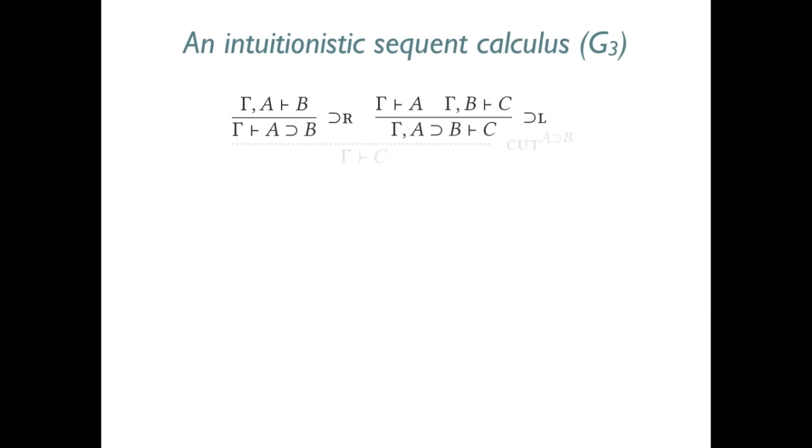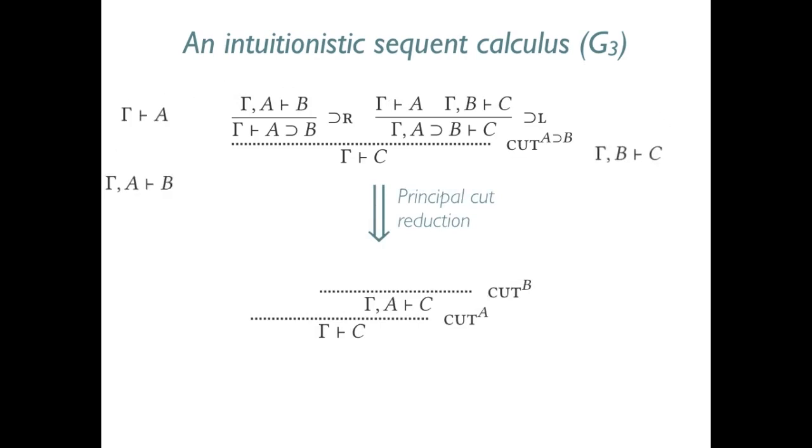Cutting these proofs together would yield a proof of gamma turnstile C. We can reduce this cut to two cuts that combine the various premises into a cut-free proof of gamma turnstile C. This principal cut reduction terminates because the two new cuts occur at smaller cut formulas.